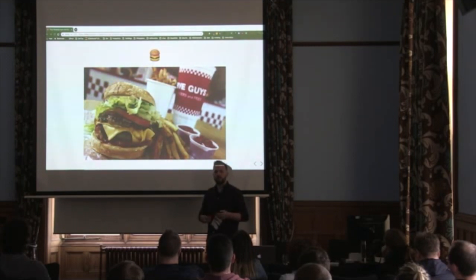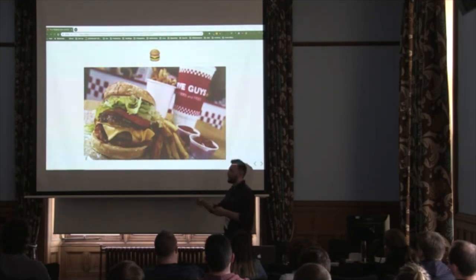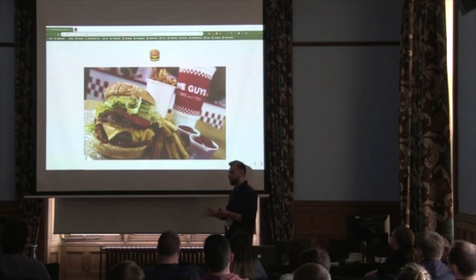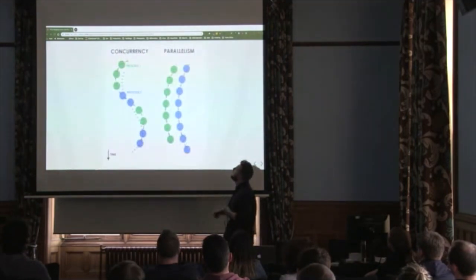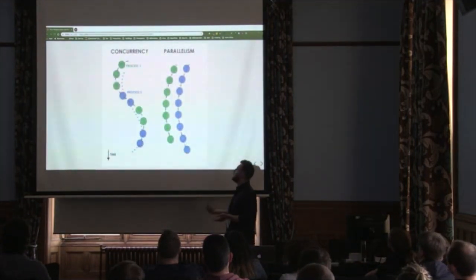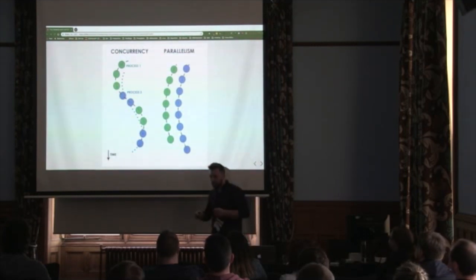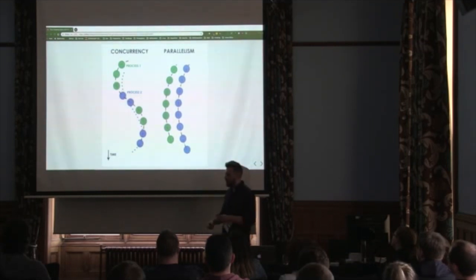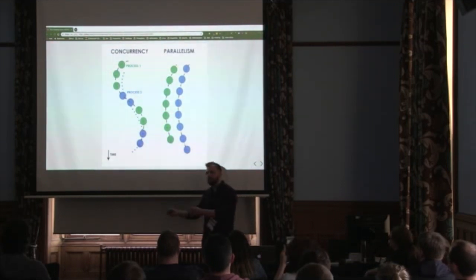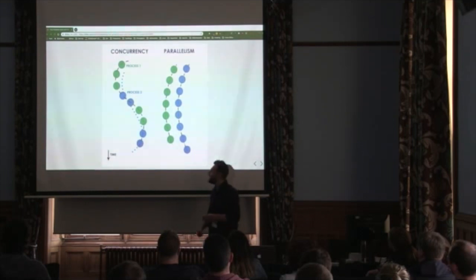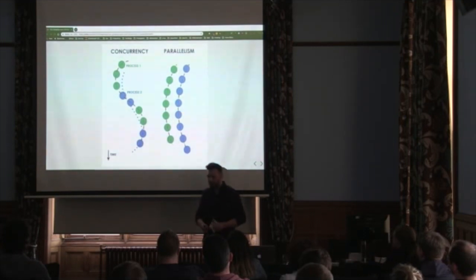A few weeks later, you go to Five Guys and it's absolutely queued out the door. You notice the person at the front is ordering their burger, waiting for it to be completely made, handed to them, and then they're on their way. This is the difference between a synchronous and asynchronous model. Concurrency is one Five Guys employee putting the tomato on one burger, the cheese on another, the bun on another — working on many burgers at once but only allocating one slice of time to each one. Parallelism, on the other hand, is two or more employees standing around a burger, making it, finishing it, moving on to the next one.